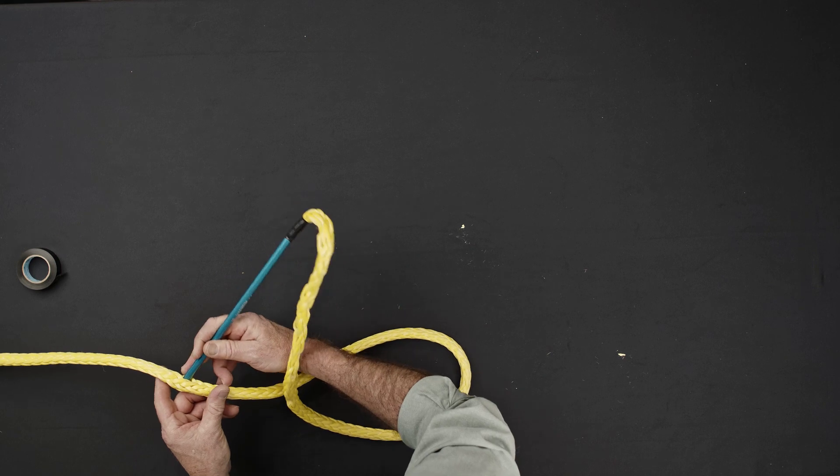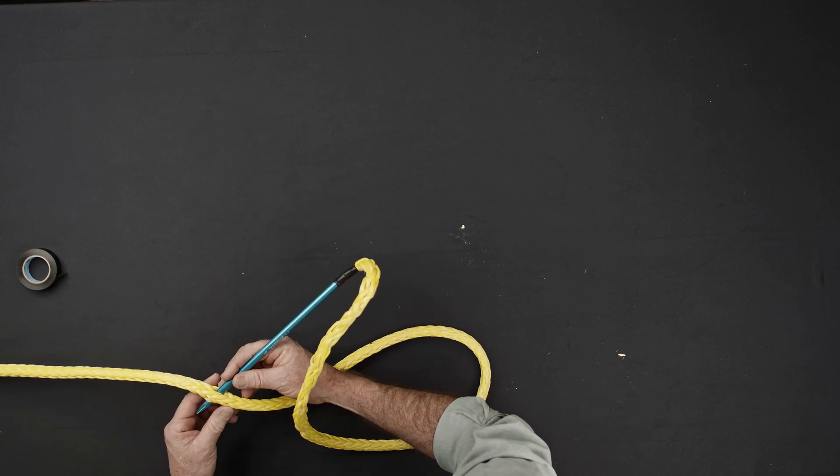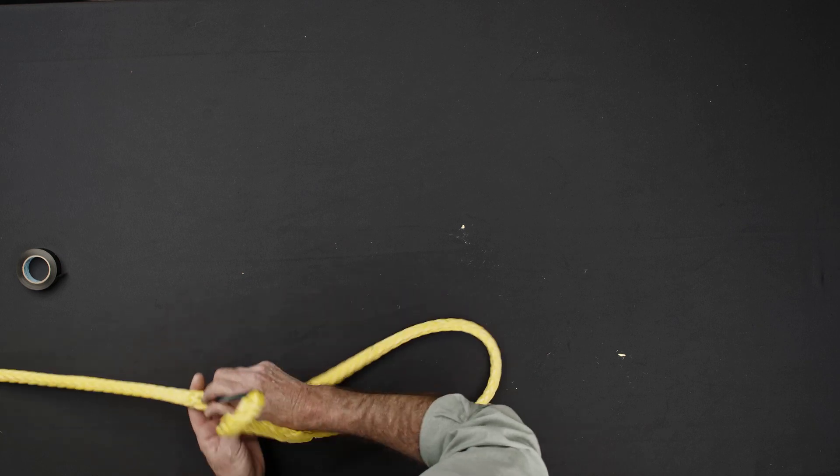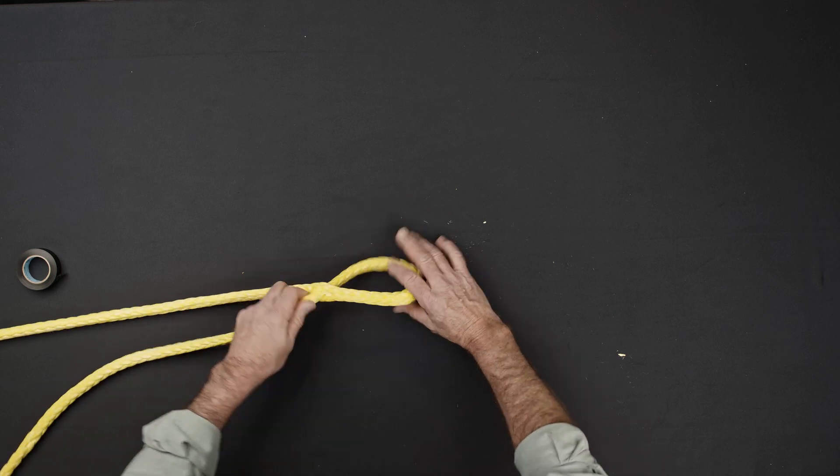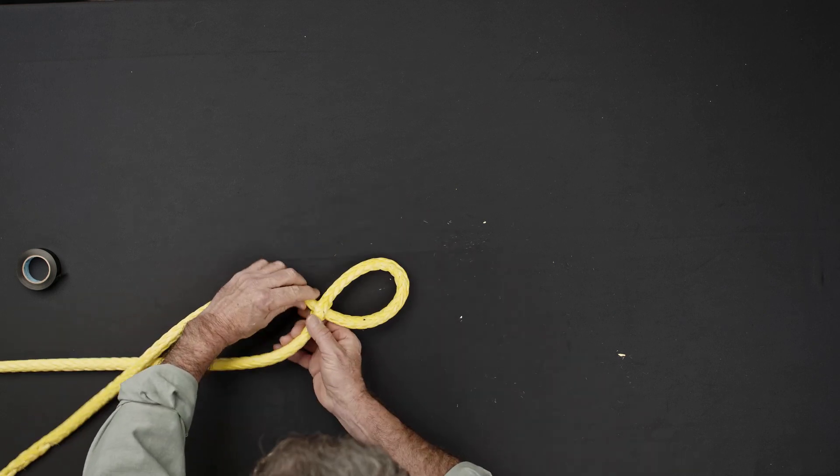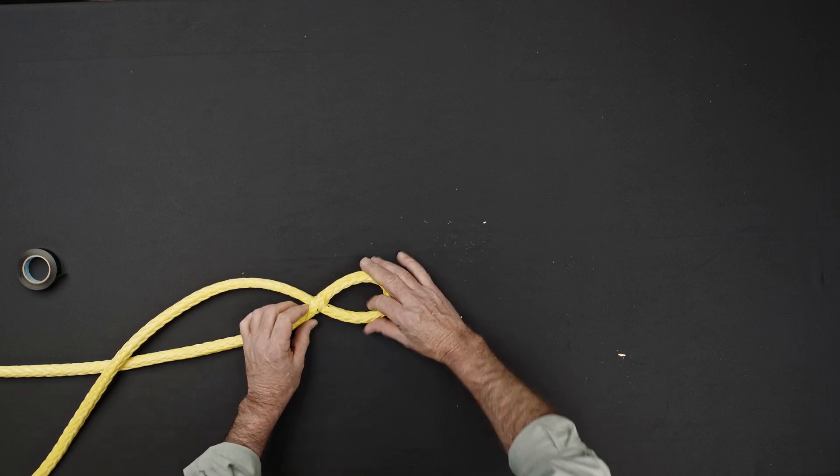At the second eye mark, pass the fit through the center of the rope being careful not to split any of the strands and to make sure that there are an equal number of strands on either side of the fit. Continue pulling the tail of the splice through until the first and second eye marks are aligned.